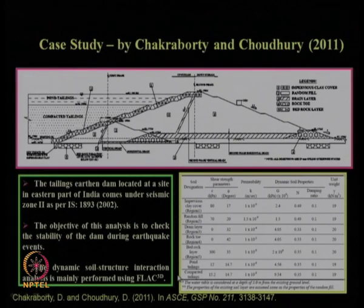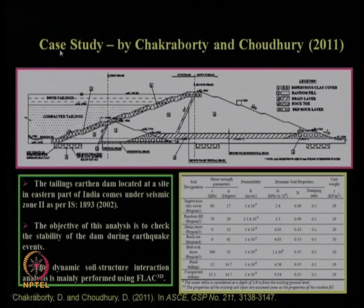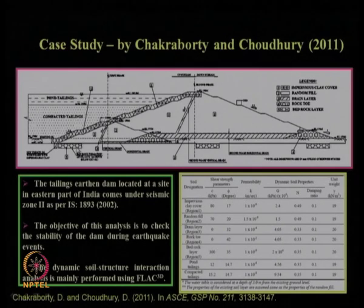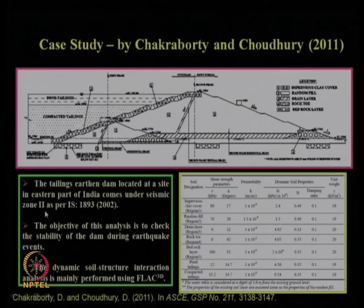In the previous lecture, we discussed thoroughly a case study — a real field problem as well as a model problem for academic purposes and an actual field-implemented problem. The field-implemented problem was analyzed by Chakravarty and Choudhury in 2011, published in ASCE Geotechnical Special Publication number 211. This tailing dam is proposed to be constructed in the eastern part of India under seismic zone 2, the safest zone as per the current IS 1893 2002 version.